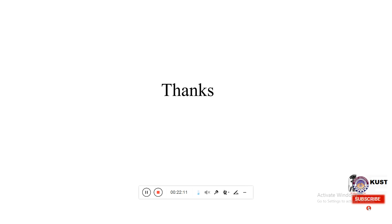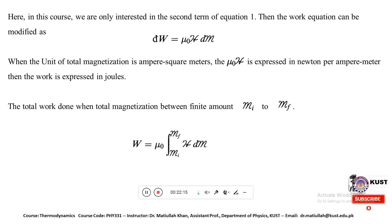This covers the work done in the dielectric material and the work done in the paramagnetic material in the toroidal windings. In the next lecture, we will discuss composite systems and generalized systems. Thank you very much.